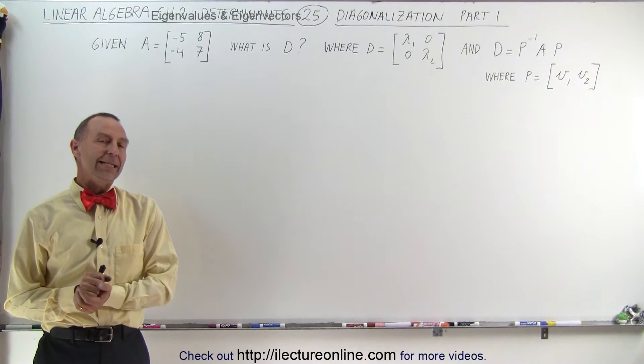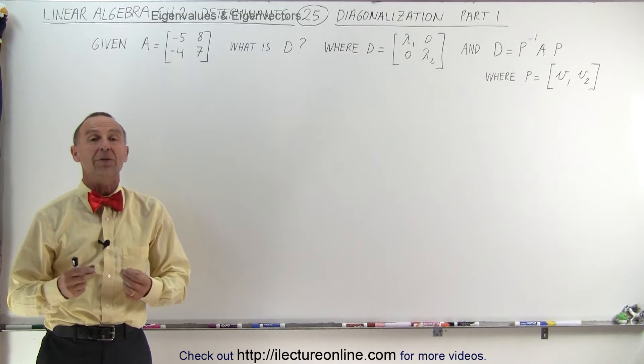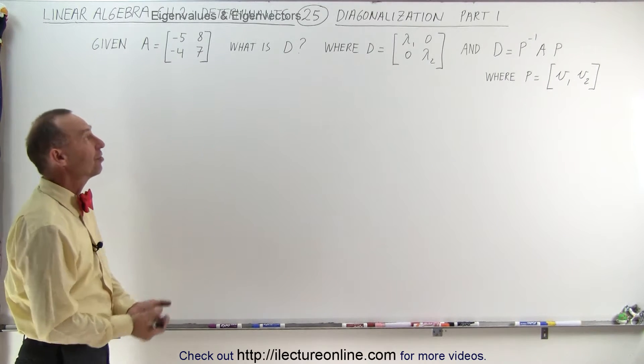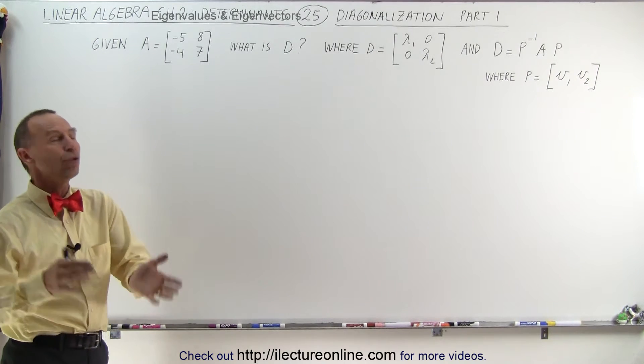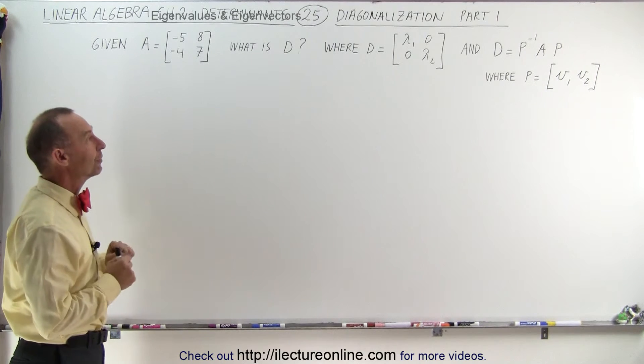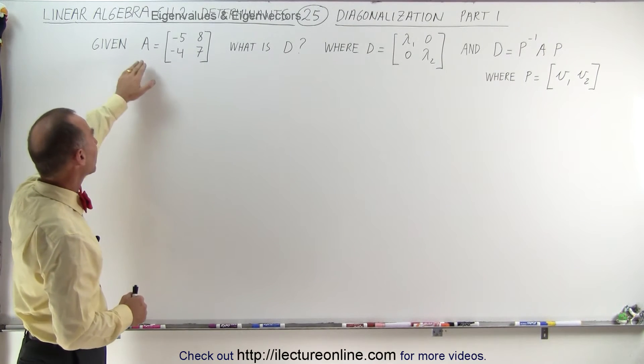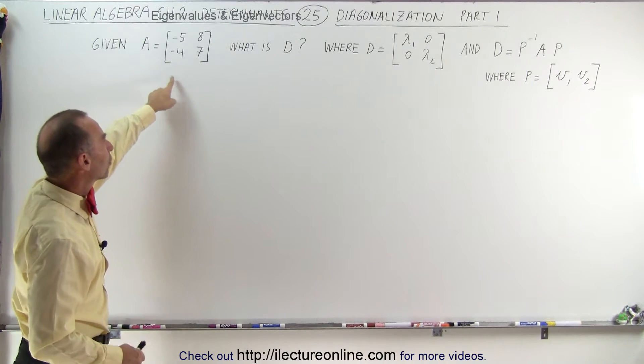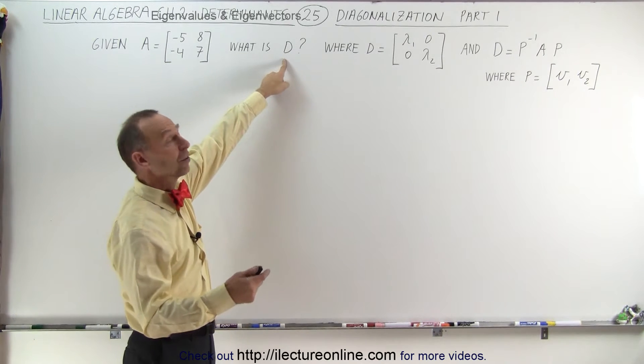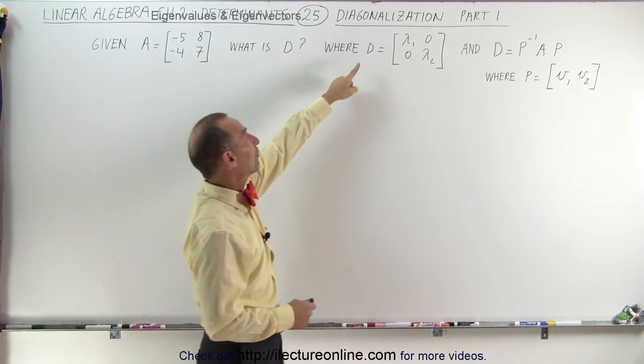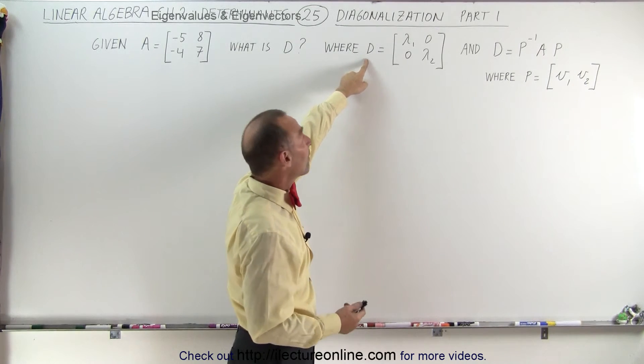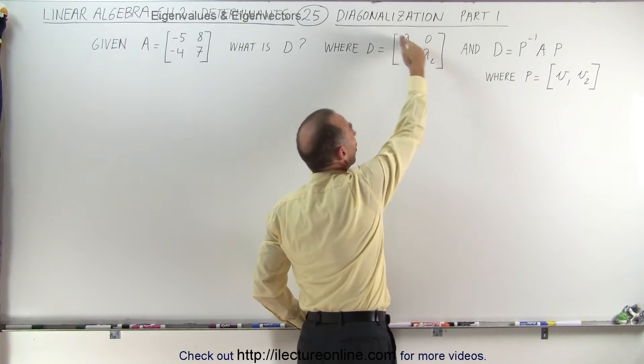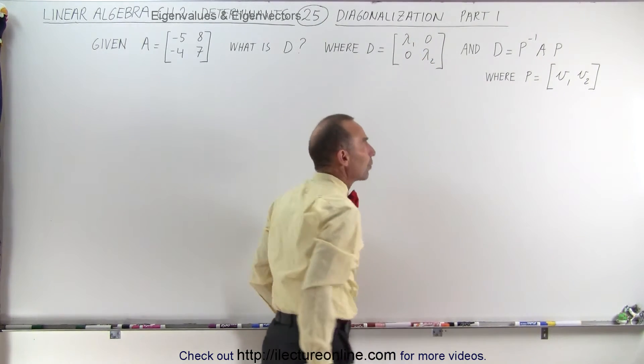Welcome to our lecture online. In this video we're going to learn how to diagonalize a matrix. It's called diagonalization and we're going to do this in two parts because there's a lot of work involved in doing so. Starting with a 2 by 2 matrix called A, here we have the elements. We're trying to find the diagonalized matrix, and the definition of the diagonalized matrix of A is that it's simply the eigenvalues along the diagonal and zeros everywhere else.